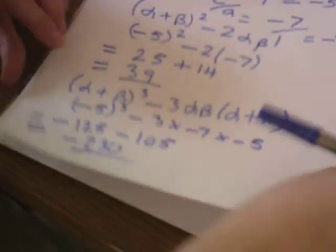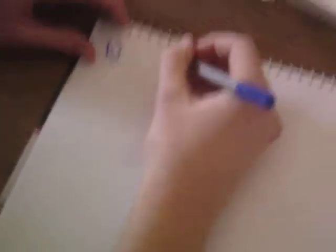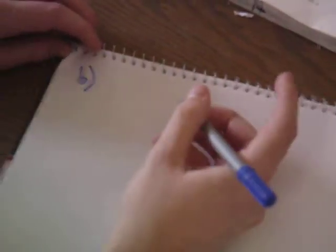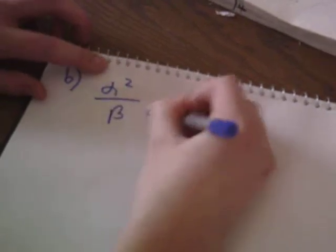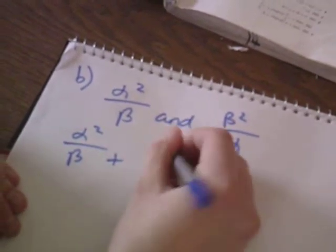And that's the first part of the question complete — you've worked out alpha squared plus beta squared and alpha cubed plus beta cubed. However, the next part of the question asks us to work out a quadratic equation with integer coefficients which has roots alpha squared over beta and beta squared over alpha. We've worked out the original sum and product of the roots, so we need to find the new sum of the roots: alpha squared over beta plus beta squared over alpha.